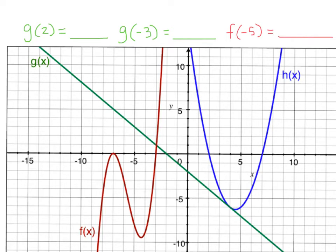Let's look at g of 2. What that means is, when x is 2, how high or low is the graph? If you look, when x is 2, the graph goes down 1, 2, 3, 4. So g of 2 is going to be negative 4.